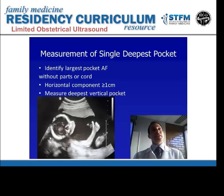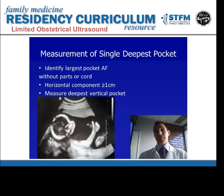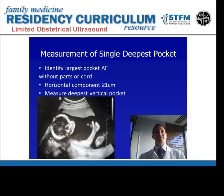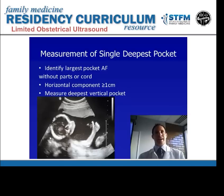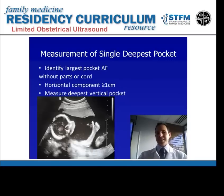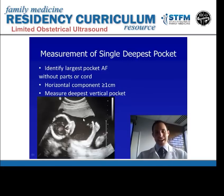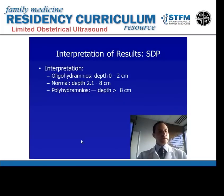The single deepest pocket is another technique useful in preterm gestations. You scan the entire uterus to find the single deepest pocket of fluid — it must be just fluid with no fetal parts or cord. The horizontal component of the pocket needs to be at least one centimeter wide in order to measure the depth and call it an actual pocket. As shown in the picture, you would measure from the placental surface down toward the fetal extremity.